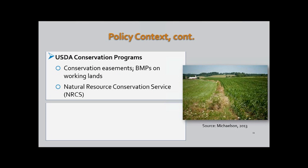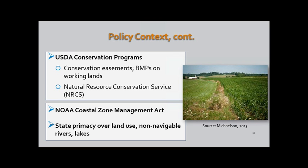In addition to EPA-oriented programs, the USDA has a long-standing interest in conservation. For the last 20 years or so, the focus has been on getting land set aside for conservation purposes — taken out of production and devoted to conservation — while also supporting conserving management practices on working land. The Natural Resource Conservation Service is USDA's lead technical agency for these programs. Under the Coastal Zone Management Act, NOAA also has the capacity to support coastal areas to implement non-point source pollution reduction measures. But in the end, states have primacy over land use, non-navigable rivers, and most lakes, giving states a very important leadership responsibility.